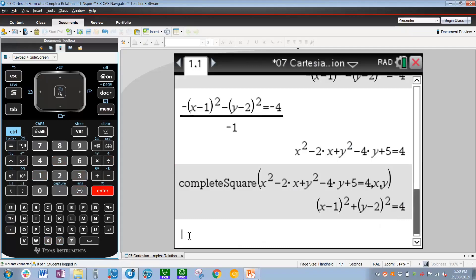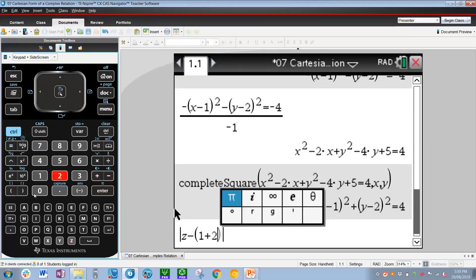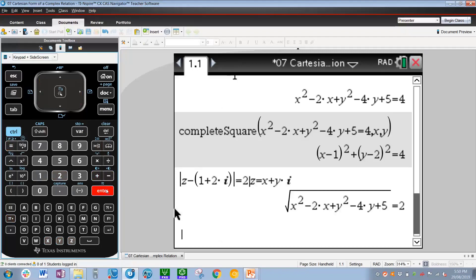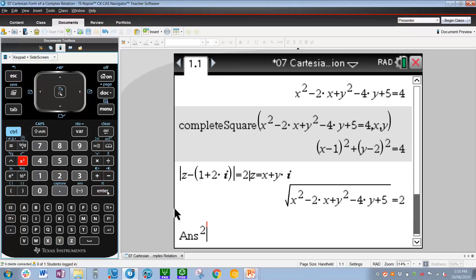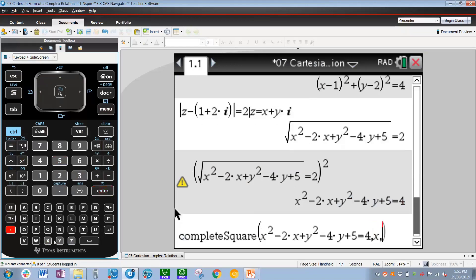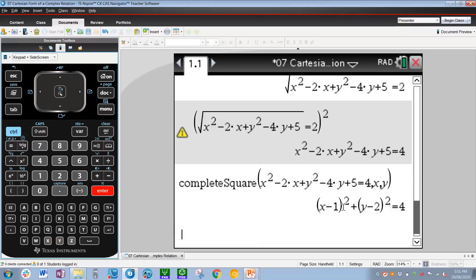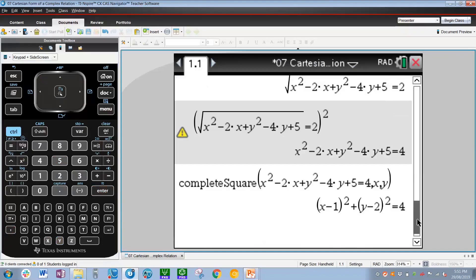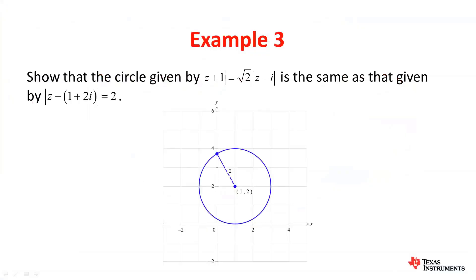We can take this to the final answer by dividing by negative 1 on the calculator — simply press divide then negative 1, press enter. Then menu 3, 5 again, up, enter, comma x comma y, and there we have it. That's the equation of a circle centered at 1 comma 2 with a radius of 2. Now we have to show this circle is the same as that given by modulus of z minus bracket 1 plus 2i equals 2. Sub in z equals x plus yi, square both sides, complete the square — and we get x minus 1 squared plus y minus 2 squared equals 4. Comparing with the previous answer, it's exactly the same, confirming that both equations describe the same circle.